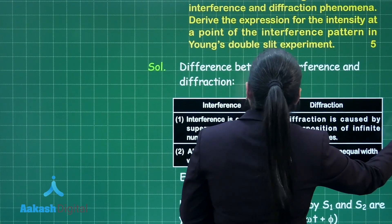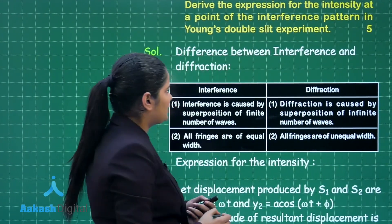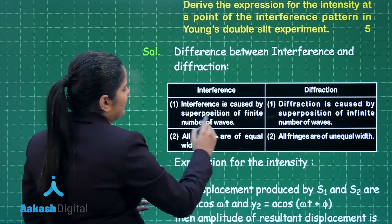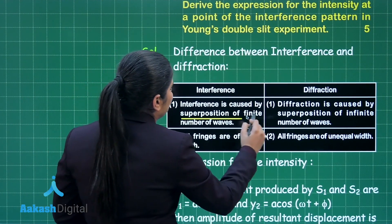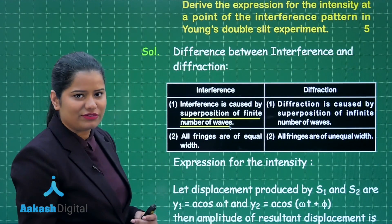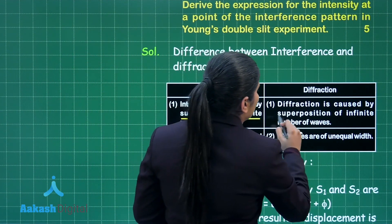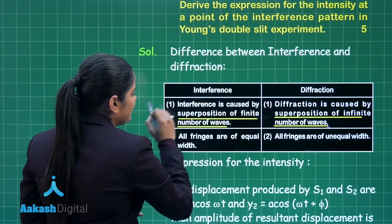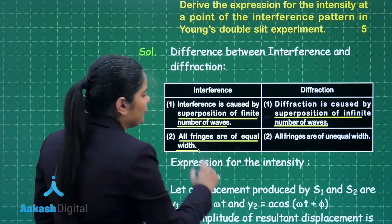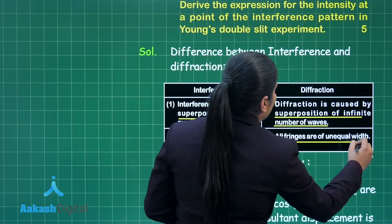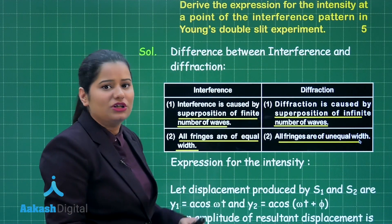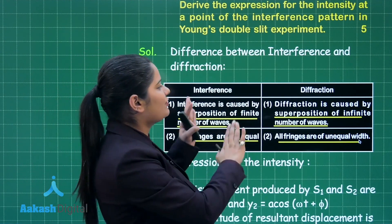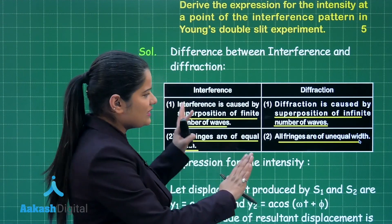In the first part we need to differentiate between interference and diffraction. Interference is caused by the superposition of a finite number of waves. On the other hand, diffraction is caused by the superposition of an infinite number of waves. Further, in interference all fringes are of equal width, while in the case of diffraction all fringes are of unequal width. These two points are enough to distinguish between them.